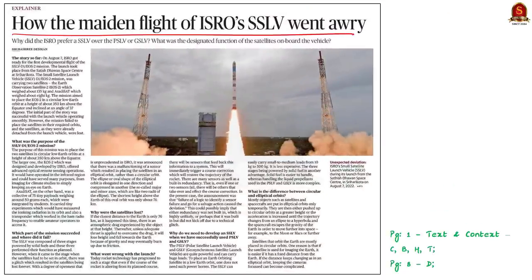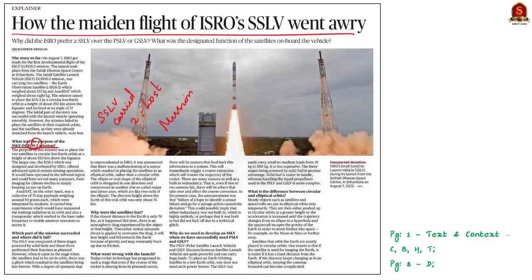Let us take up this text and context article for our discussion. It is about the SSLV-D1 EOS-2 mission. The news is that the launch vehicle SSLV carried two satellites and both of them were lost because of the inability to place them in the required orbits. This is the crux of the news article.